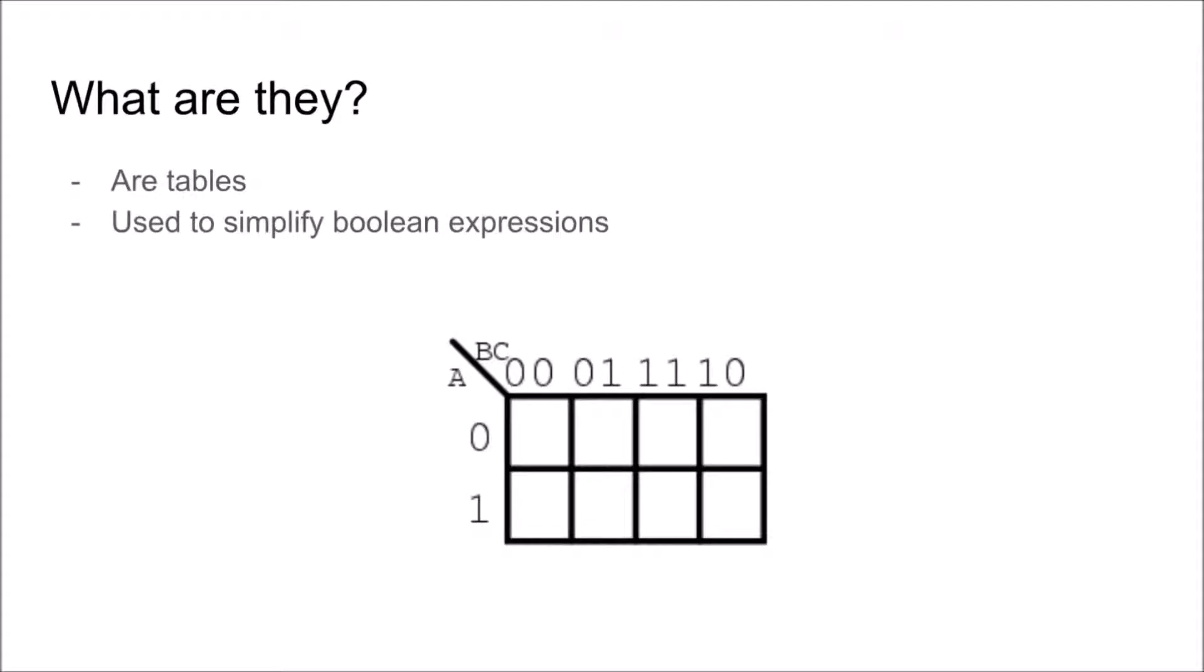First of all, a Karnaugh map is an alternative way which is often easier than boolean algebra to simplify boolean expressions for those involving more than two variables. They are similar to a truth table and allow you to detect groupings with common factors.